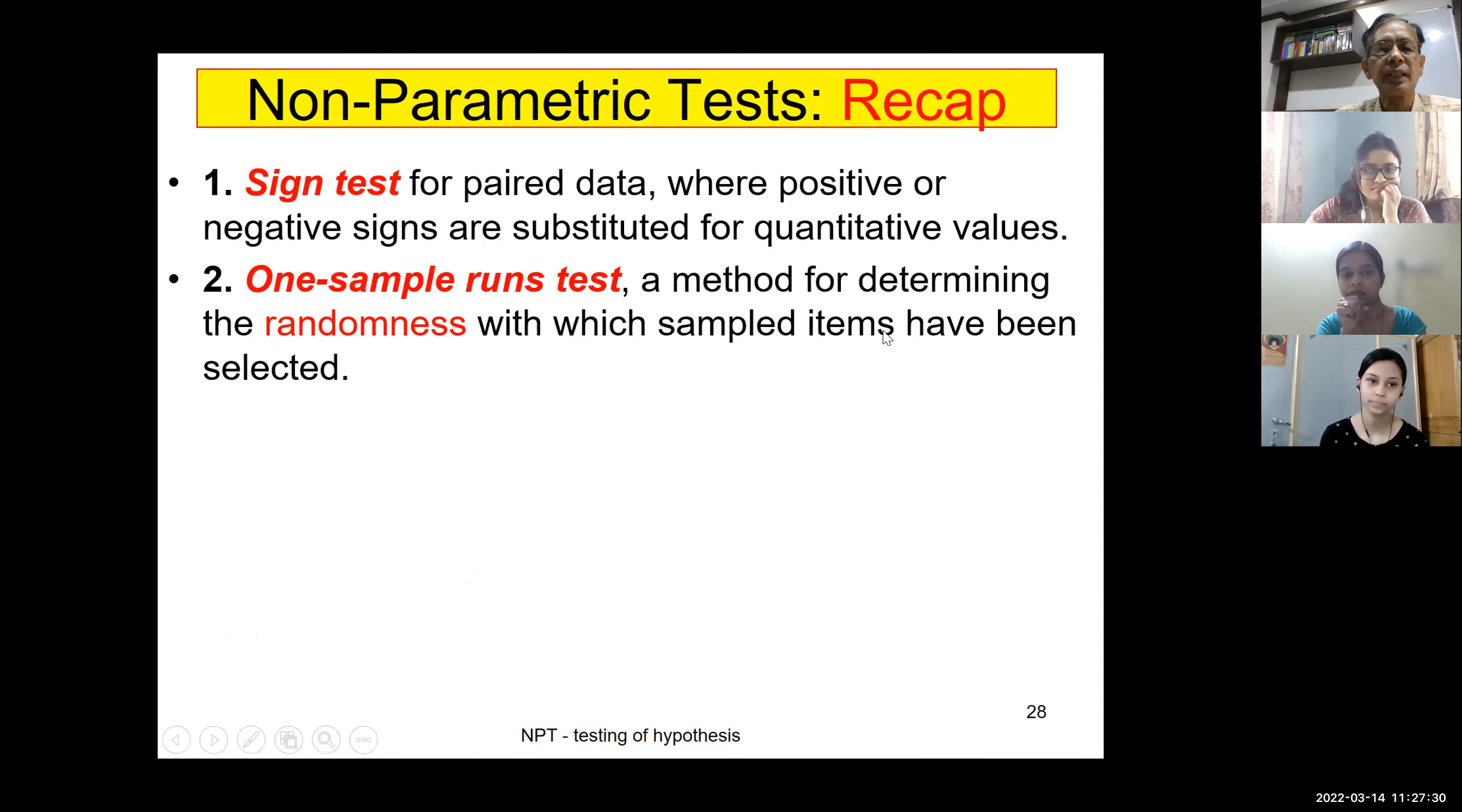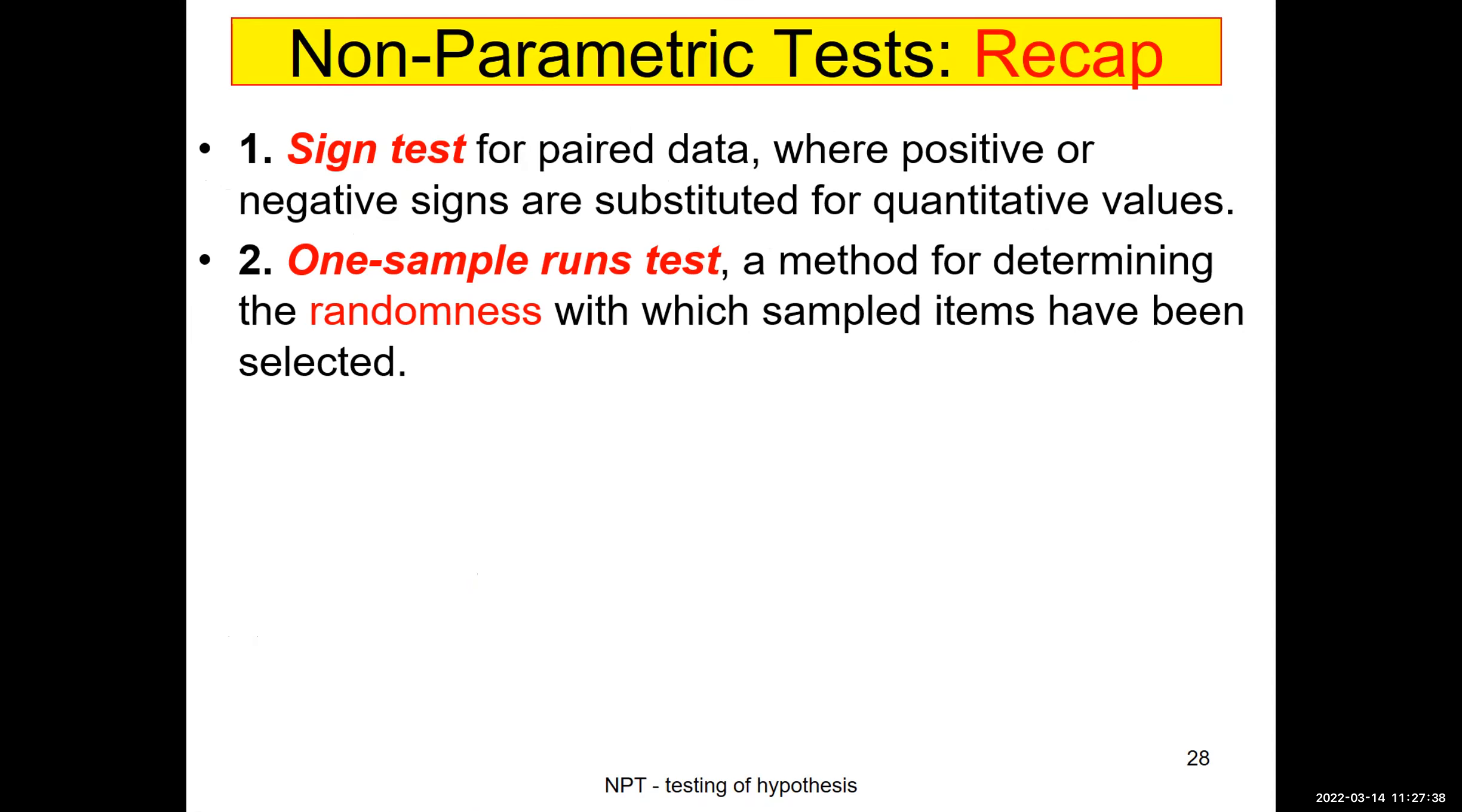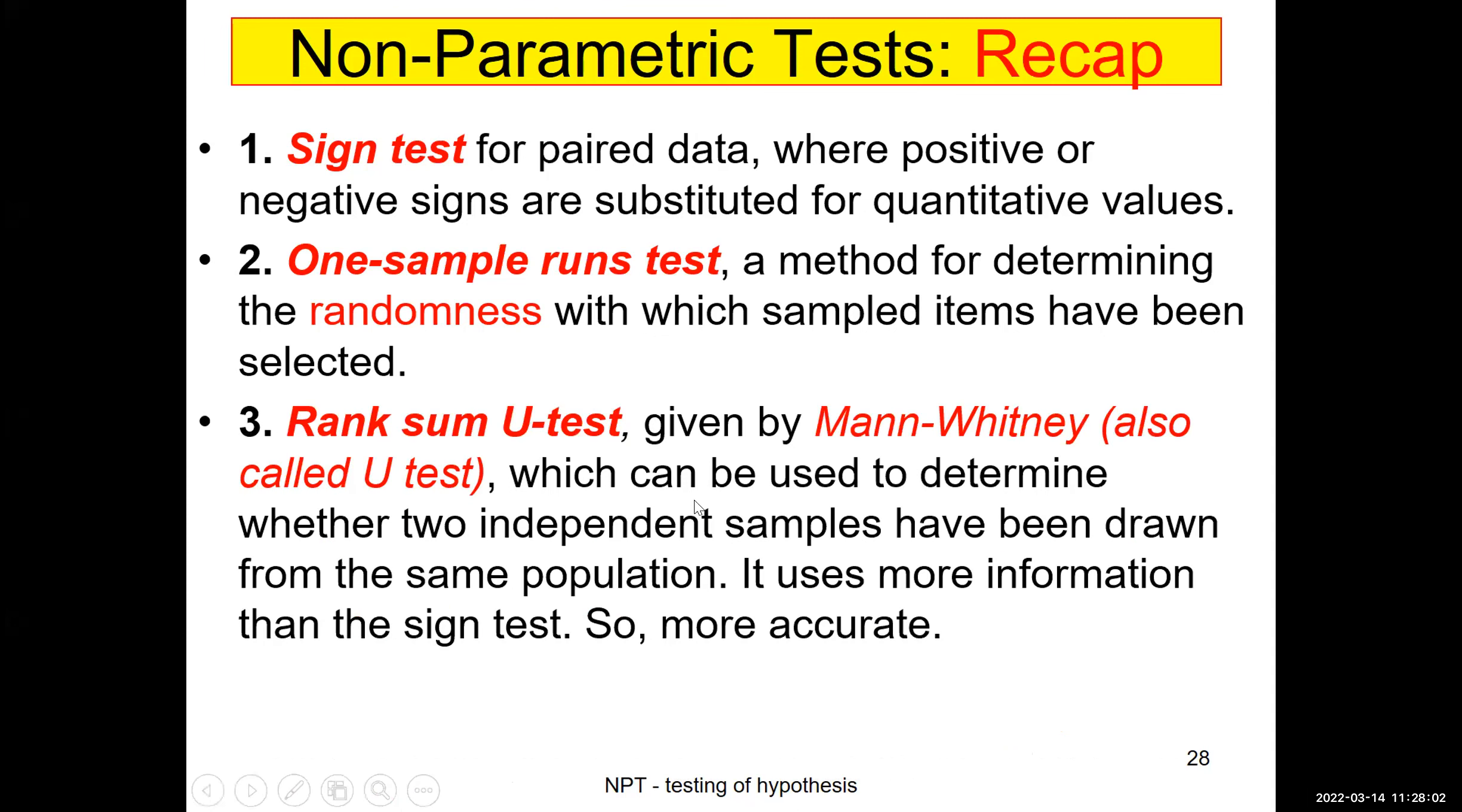Next we discussed the runs test, which is actually known as one-sample runs test. This is a method or technique which determines the pattern. If it is following a particular pattern or not following, it should be called randomness. If there is no pattern, we'll be calling it random. And there also we counted number of runs in a series - that are the major statistic that we use for the formula.